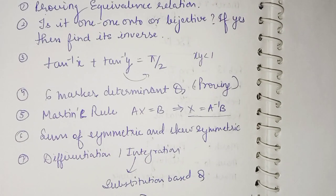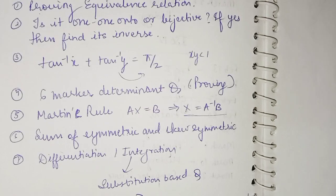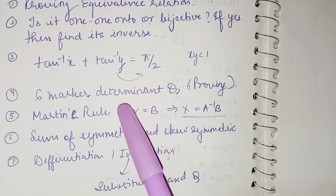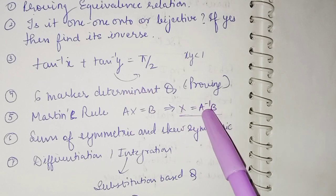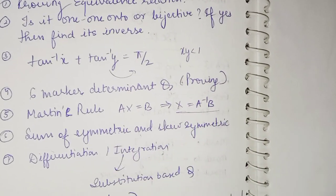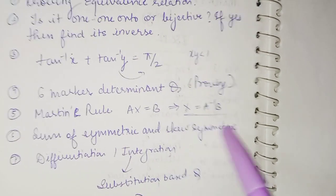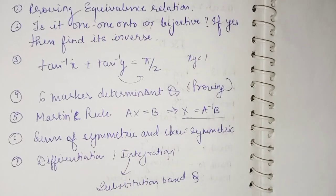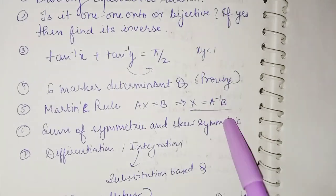Then we have Martin's Rule, a very important thing again to find xyz values. AX is equal to B, and X is equal to A inverse B of this form. You know what is A inverse. Sum of symmetric and skew symmetric, like prove that matrix A equal to 1 4 3 6 is the sum of this and this. Practice this question.